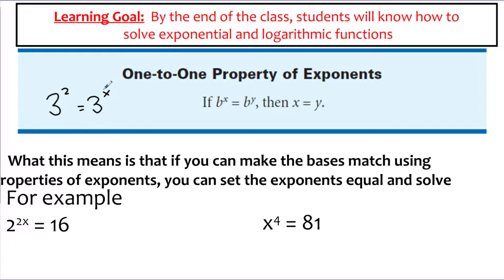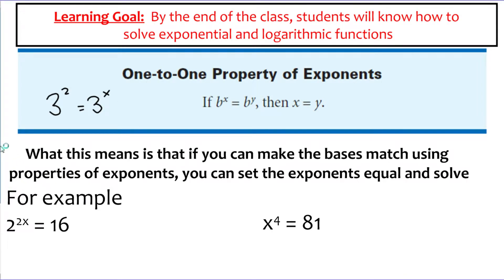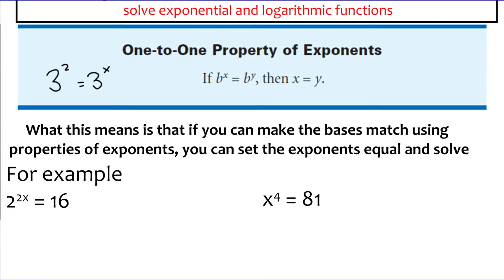We can extend that further and take it the other way: if you can make the exponents match, then the bases have to be the same as well. We're going to see both of those examples in this problem. In the first example, if I wanted to know what x is where 2 to the 2x is equal to 16, using this one-to-one property...